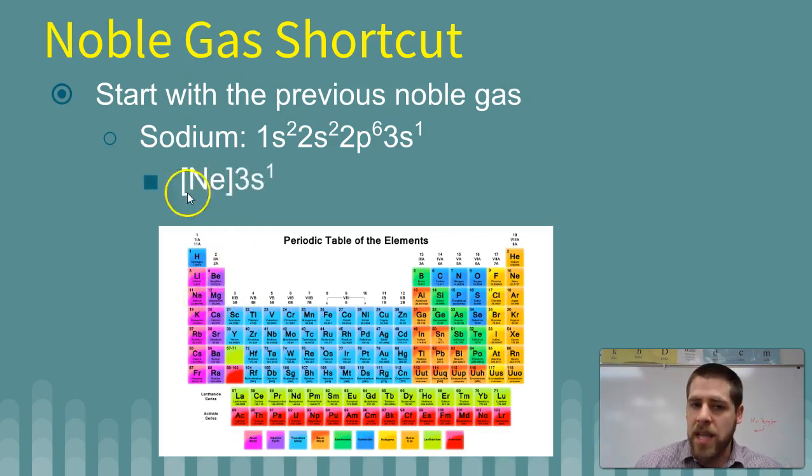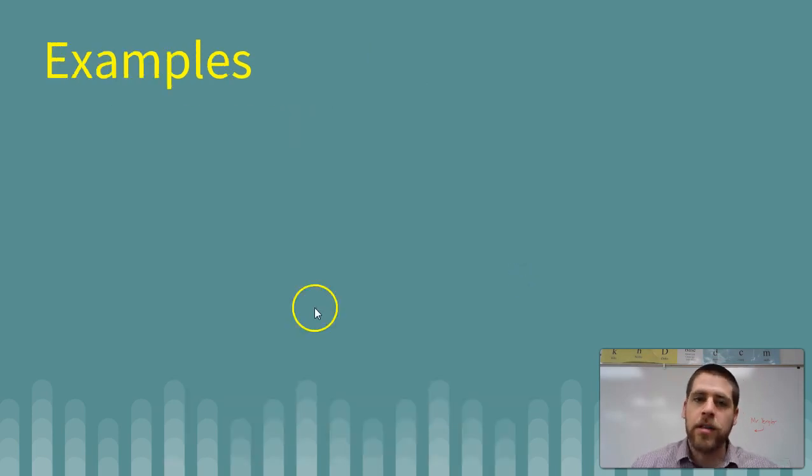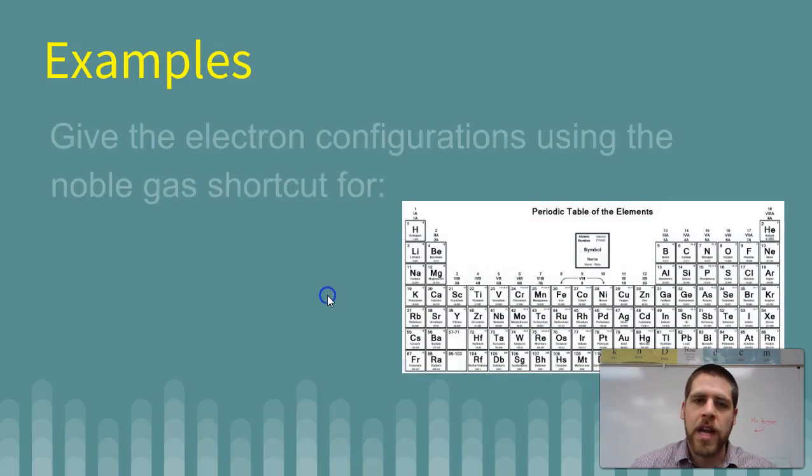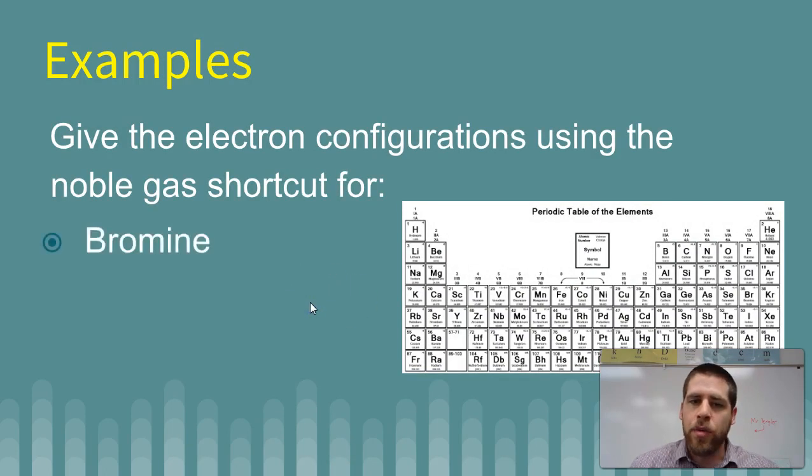So we would say it has the same configuration as neon, the previous noble gas, so 1s2, 2s2, 2p6. And then it has 3s1. All right, let's look at some examples. It's always helpful to have a periodic table, so have that handy.